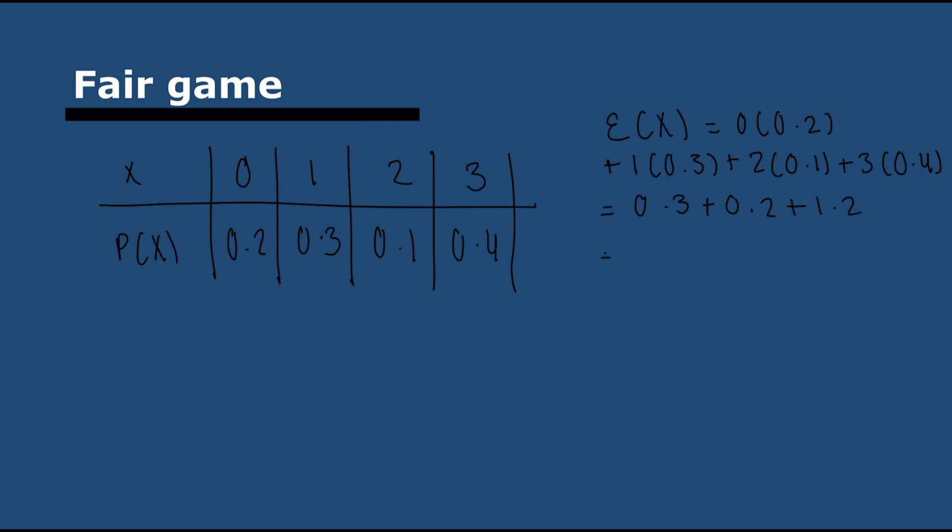And it is a fair game if E(x) equals 0. Let me explain. In this case, E(x), we're going to add all of these up. And what it's going to give us is 0.3 plus 0.2 plus 1.2. So a total of 1.7. So this would only be a fair game if the cost of entry into the game were 1.7 euros, dollars, whatever this is. If it costs more, it is unfair. If it costs less to enter, then actually it's beneficial to the individual playing. That's what we mean by fair.